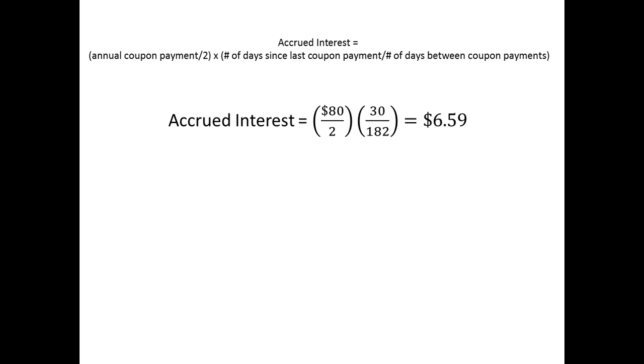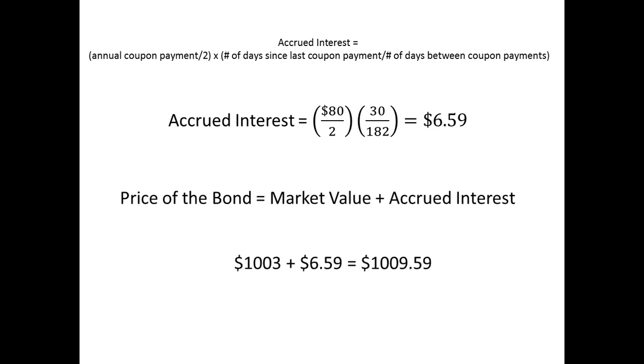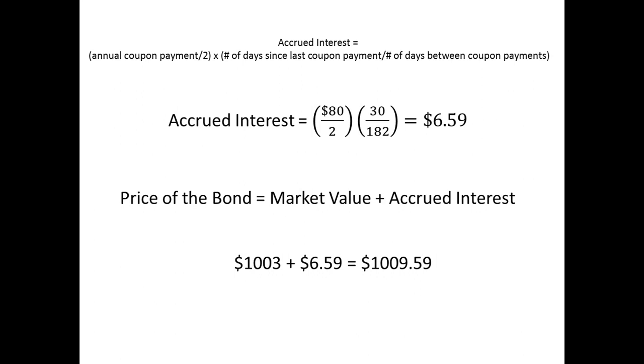If the quoted price of the bond is $1,003, then the purchaser will have to pay that plus the accrued interest. So the buyer will have to buy the bond for $1,009.59.